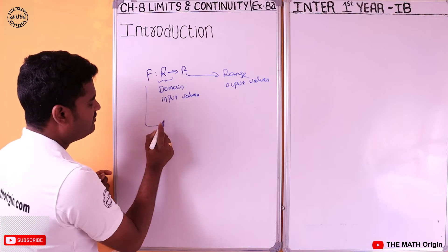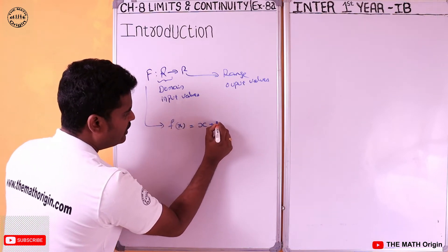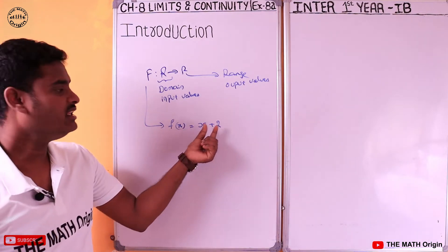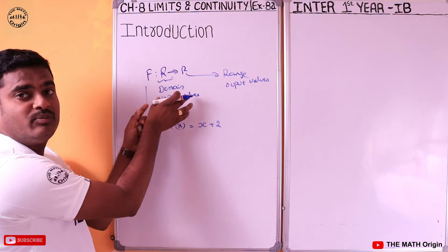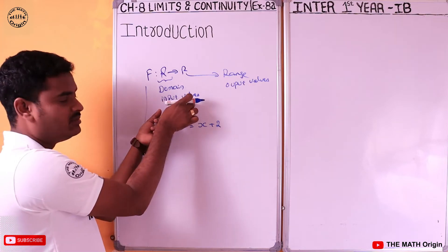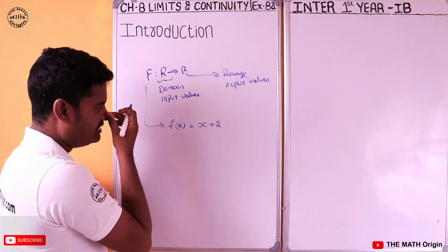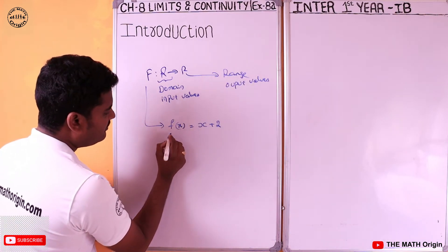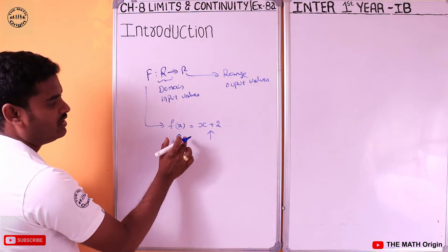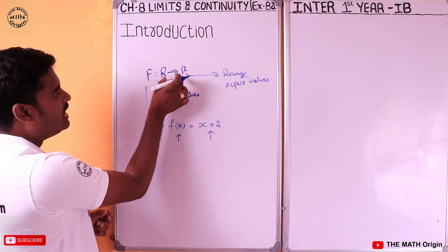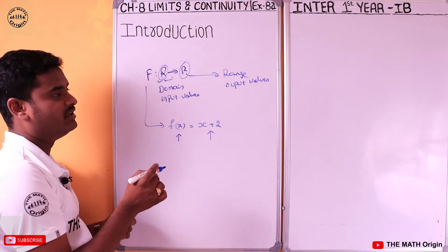For example, let us say function f(x) is equal to x plus 2. Here domain represents input values and range represents output values — whatever input values we give, whatever output we get is called the range.